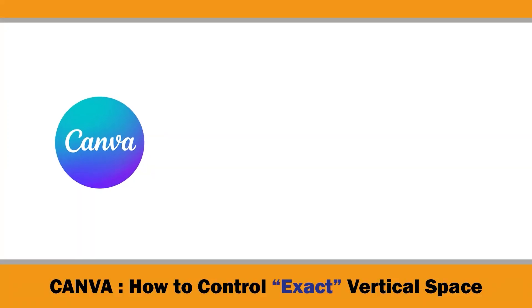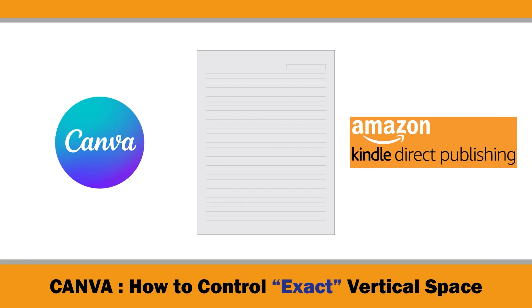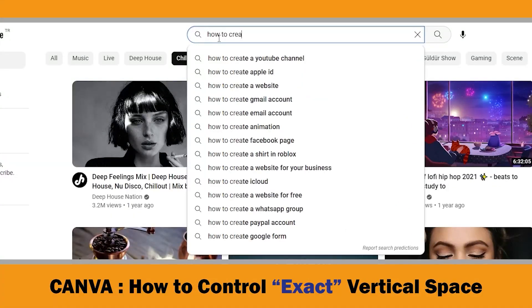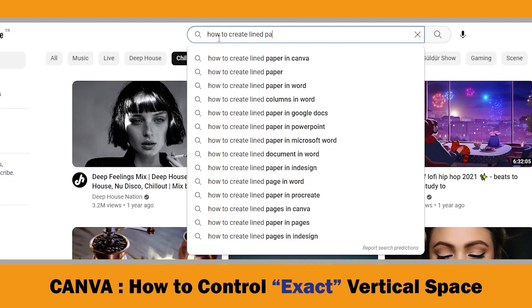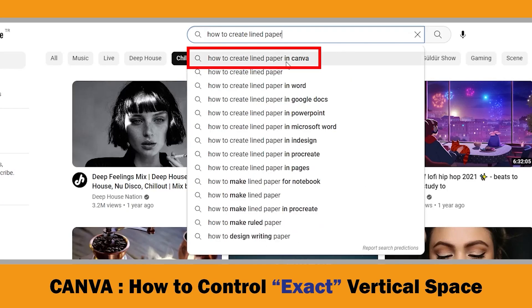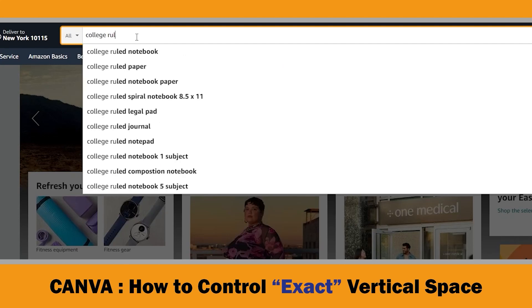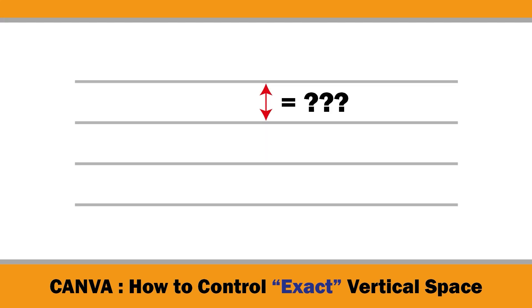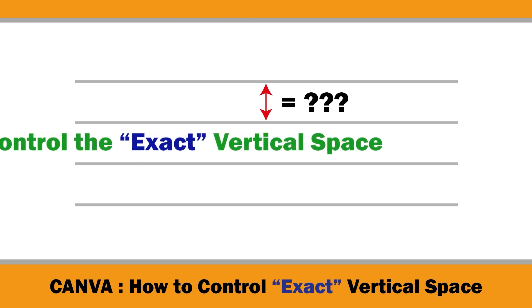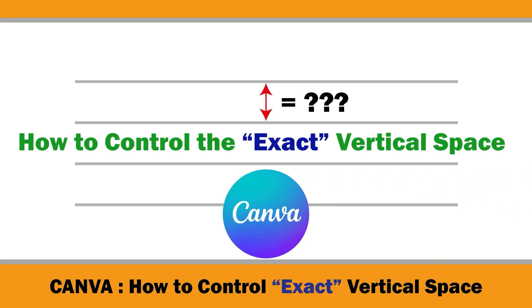Most people use Canva free or pro versions to create line papers for the KDP low content book publishing business. However, there was no information in the most popular YouTube tutorials about controlling the exact vertical space between horizontal lines. I was surprised because how can you publish notebooks with industry standards like college ruled or wide ruled if you can't control the spacing? In this video, I'm going to show you how to control the vertical space between the lines in Canva. It sounds basic, but it will help you create better KDP interiors.